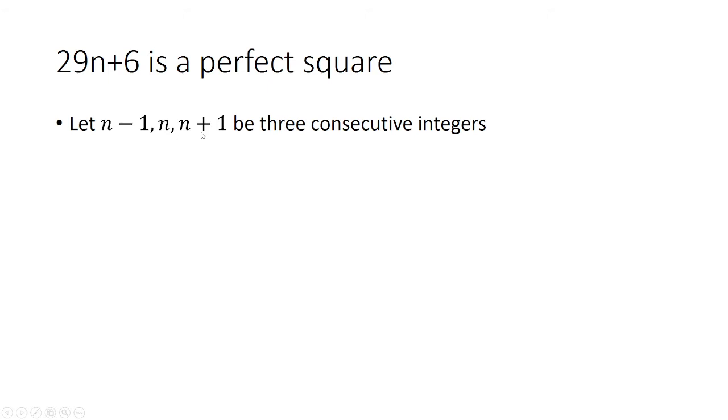Let's assume that n-1, n, and n+1 are three consecutive integers. If 29n+6 is a perfect square, that means we can rewrite 29n+6 as some integer squared. In this case, we say a is the integer, so 29n+6 = a².